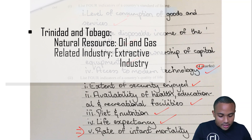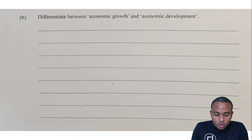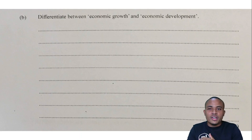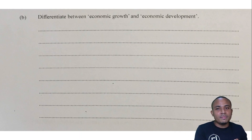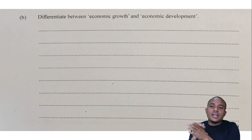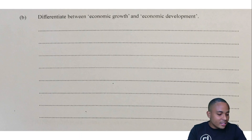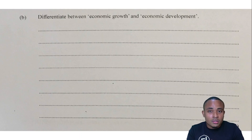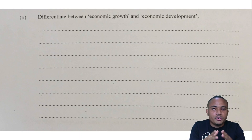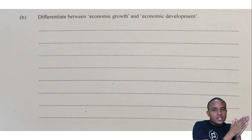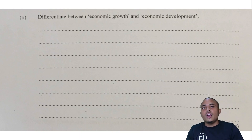Part B: differentiate between economic growth and economic development. One way to think about it — economic growth deals more with quantitative aspects of the economy, while economic development looks at qualitative aspects. For economic growth we're looking at numbers: GDP, national output, GNP, NNP. GDP stands for Gross Domestic Product, which is how much our country produces within a given time period.